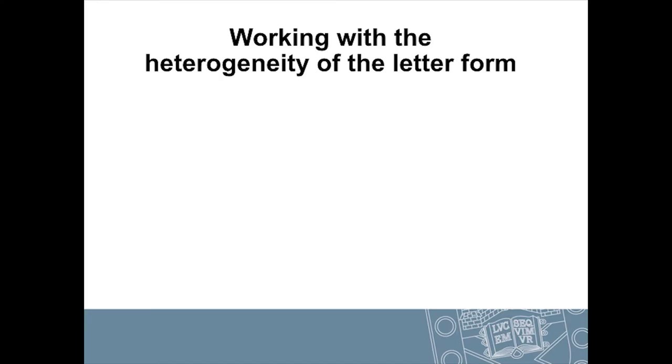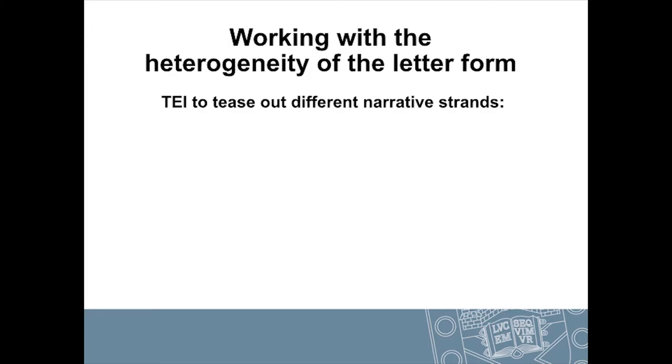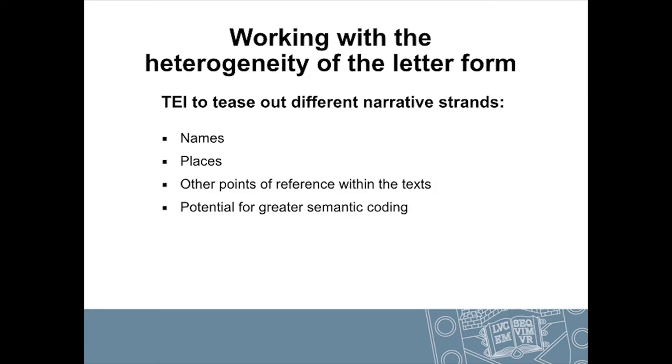The other challenge, which is quite engaging for me, is the heterogeneity of the letter form. We're going to get lots of different topics coming up in one letter, and we have to highlight that as a real characteristic of the genre. Whereas in the past a catalogue might have one entry per letter saying what it's about, we're looking at ways to use TEI to tease out different narrative threads — encoding names of places, people, and Hardy's literary works, including geolocations and fictional places. We're also looking for greater semantic encoding to help a researcher understand a letter on a topic-by-topic basis.